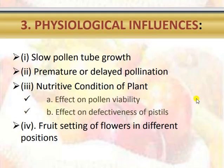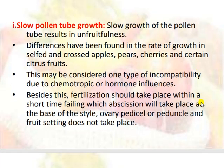Physiological influences on unfruitfulness include slow pollen tube growth, premature or delayed pollination, nutritive condition of the plant, effect of pollen viability, defectiveness of pistils, and fruit setting of flowers in different positions. Slow growth of the pollen tube results in unfruitfulness; differences have been found in the rate of growth in self- and cross-pollinated apples, pears, cherries, and certain citrus fruits. This may be considered one type of incompatibility due to chemotropic or hormone influences. Fertilization should take place within a short time, failing which abscission will occur at the base of the style, ovary pedicel, and fruit setting will not take place.